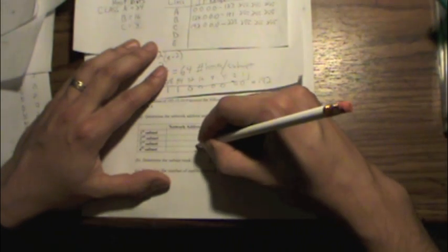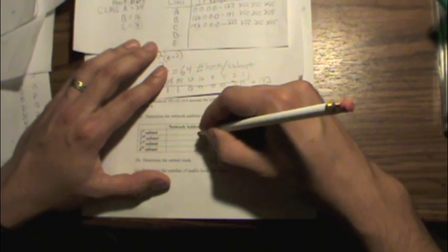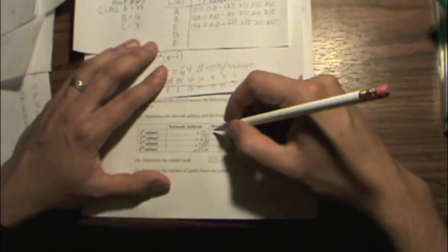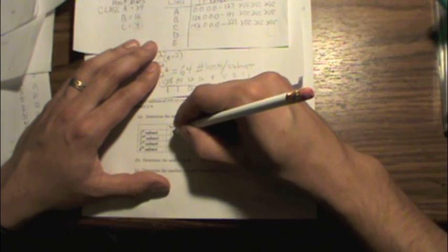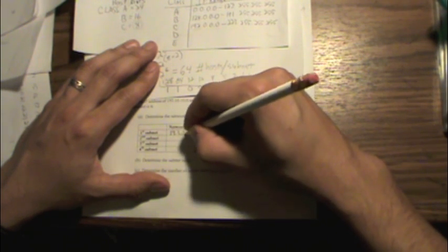If we added 64 again, we'd get 256. And that's not a valid subnet range because that's as high as you can go.